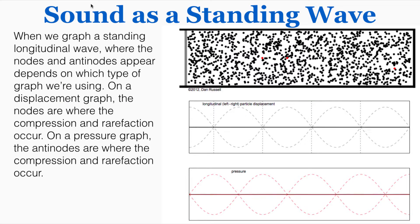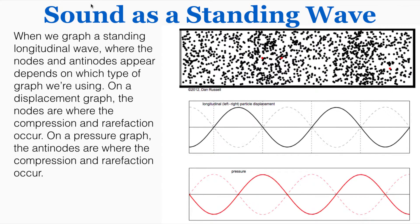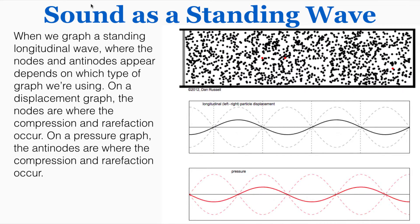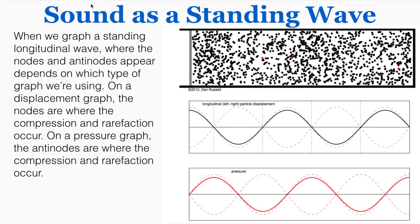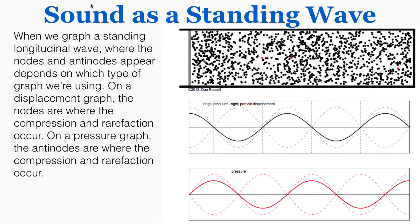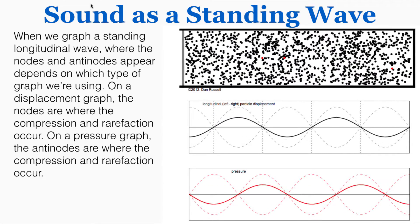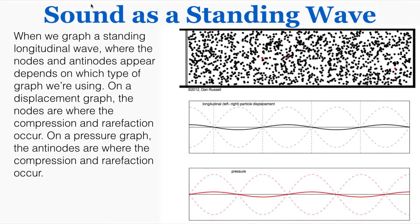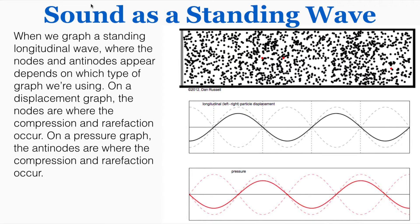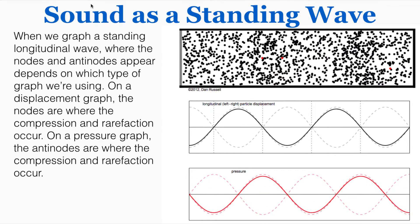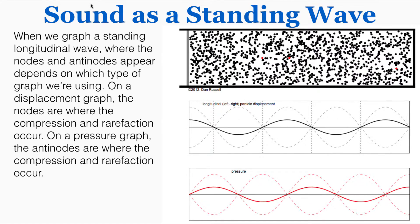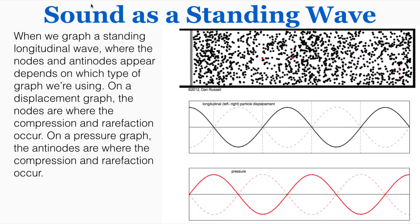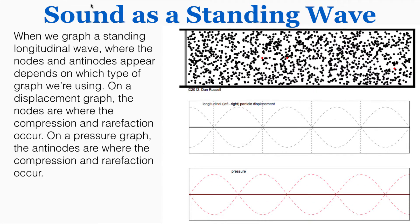This lecture is about when sound occurs as a standing wave. When we graph a standing longitudinal wave, where the nodes and antinodes appear depends on which type of graph we're using. On a displacement graph, the nodes are where the compression and rarefaction occur, because those are the places on the standing wave where there's the least displacement — the particles in those compressions and rarefactions do not move at all.